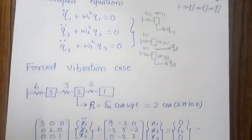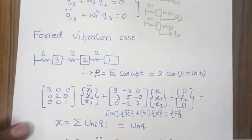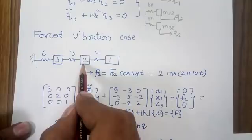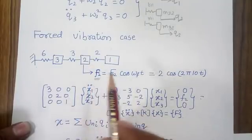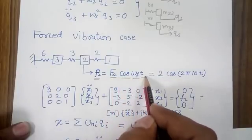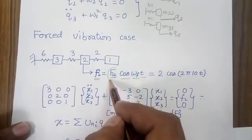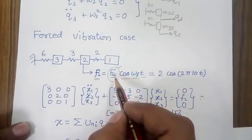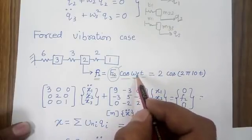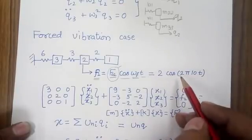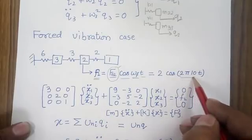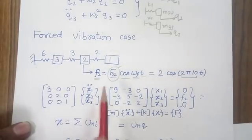Now let's move to the forced vibration case using the same problem. Here the three masses are present and a harmonic force is applied on the second mass. The force equation is F₀₂·cos(ωF·t), where F₀₂ is the constant amplitude, ωF is the forcing frequency, and t is time. A frequency of 10 Hz is used, so ωF = 2π × 10.